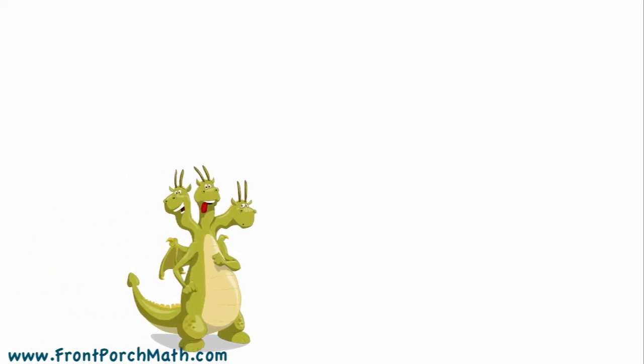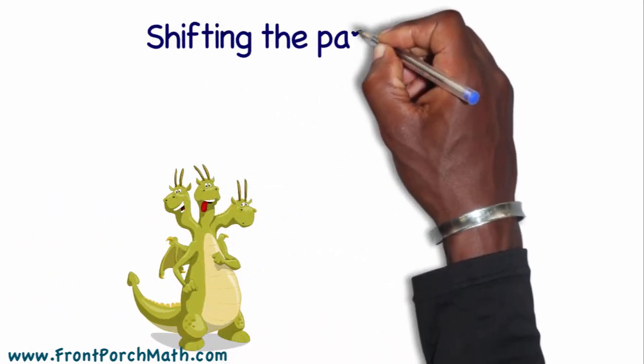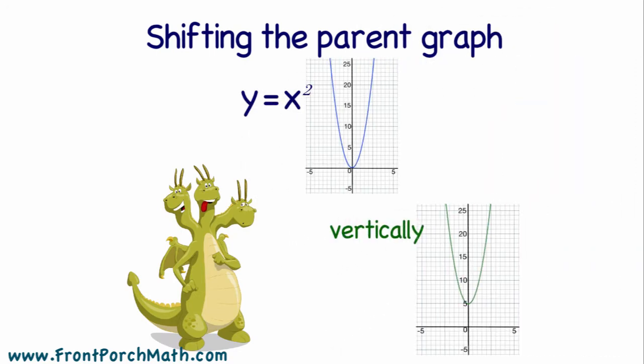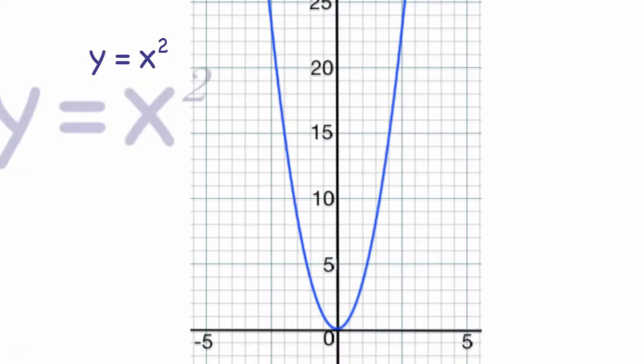Today we're going to determine how we can shift our parent graph y equals x squared vertically along the y-axis. I'm going to now try and shift my entire graph up one space. I'm going to physically do it and then compare my new coordinates and see how my x and y values are related to each other.